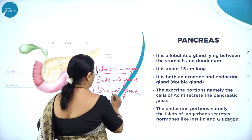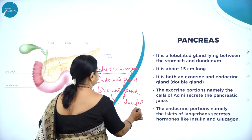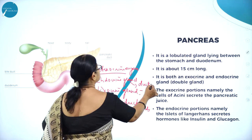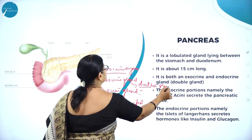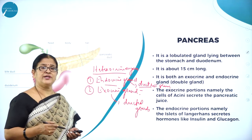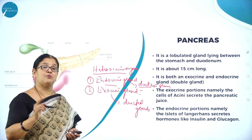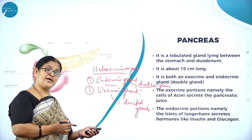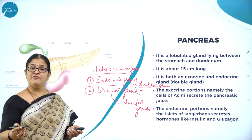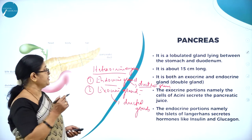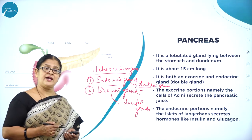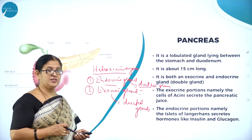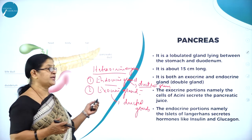Endocrine glands are called ductless glands, without ducts. The secretions of endocrine glands are not called secretions but are called hormones. Hormones are chemical substances which have a great role to play, and the organ of production of these hormones is different from the organ of action. The pancreas also acts as an endocrine gland where hormones are poured directly into the bloodstream, hence they are called ductless glands. So we call the pancreas a heterocrine gland.